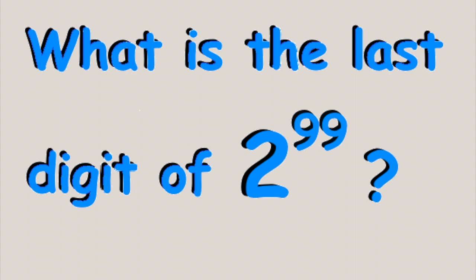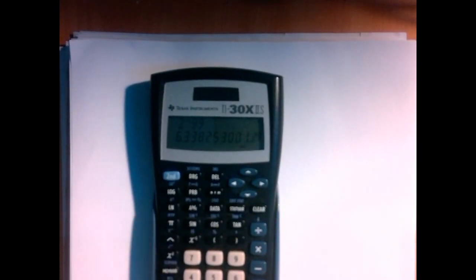We need to find the last digit of the number 2 to the 99th power. This number is so big that we cannot just look at the last digit using the calculator. We're also not expected to compute such a large number.